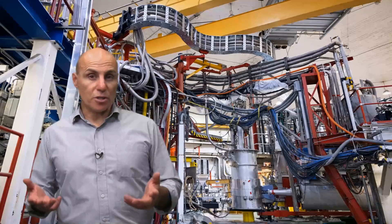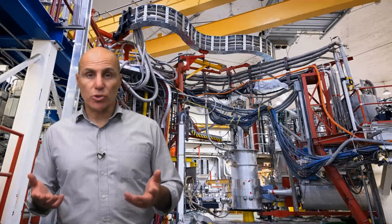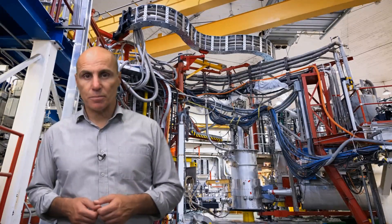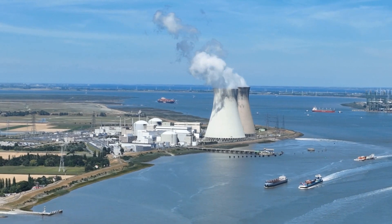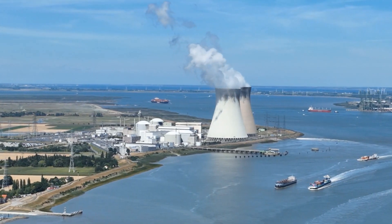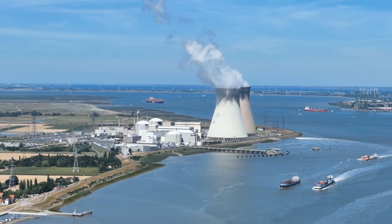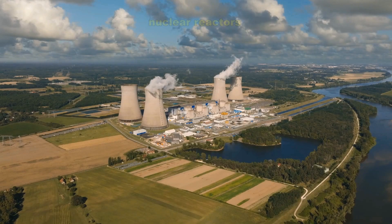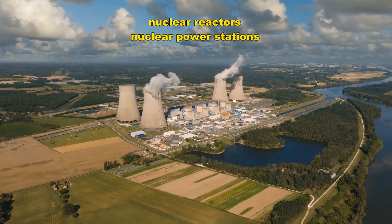But how are neutrons produced? Well, neutrons are produced in nuclear reactions. The cheapest and easiest way to produce the large numbers of neutrons required to make a decent amount of cobalt-60 and many other radionuclides is to use nuclear reactors inside nuclear power stations.